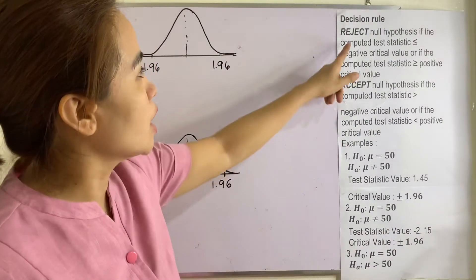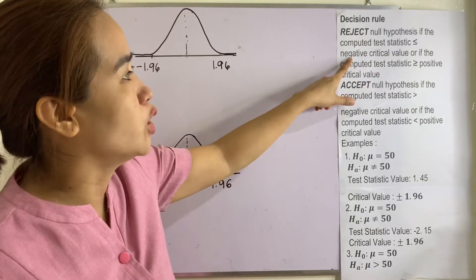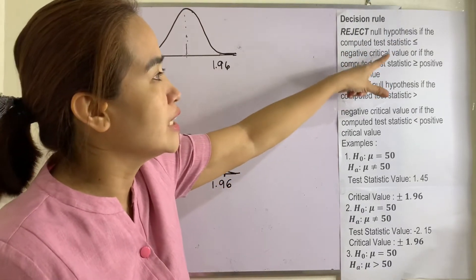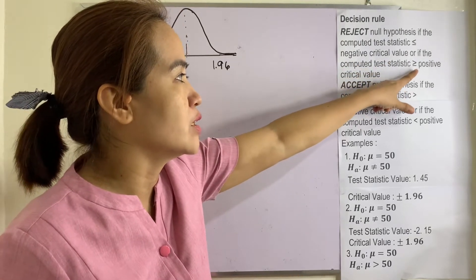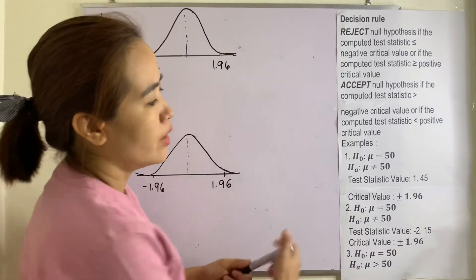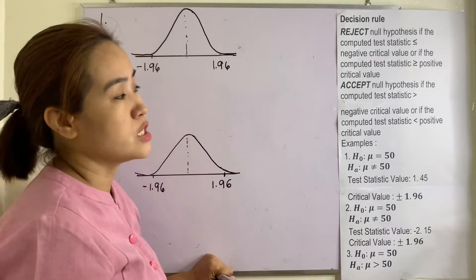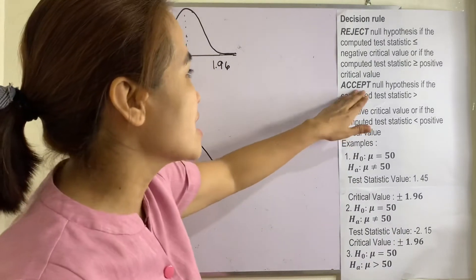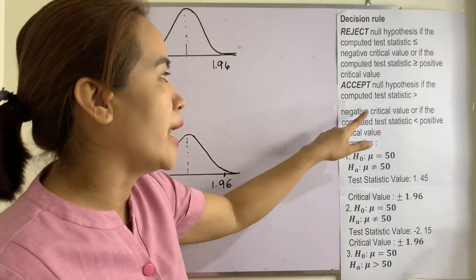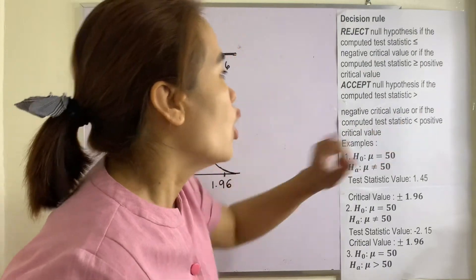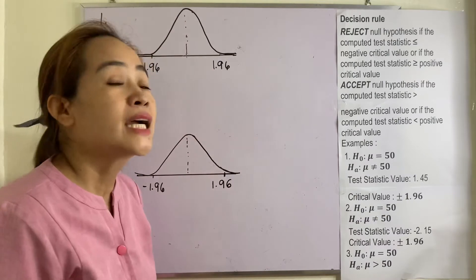This is the decision rule. Reject the null hypothesis if the computed test statistic is less than or equal to the negative critical value, or if the computed test statistic is greater than or equal to the positive critical value. Accept the null hypothesis if the computed test statistic is greater than the negative critical value or less than the positive critical value.